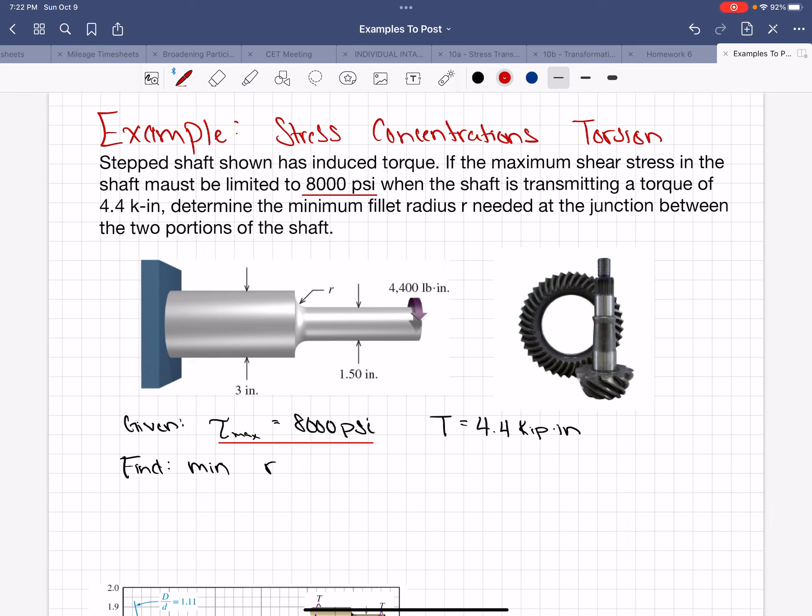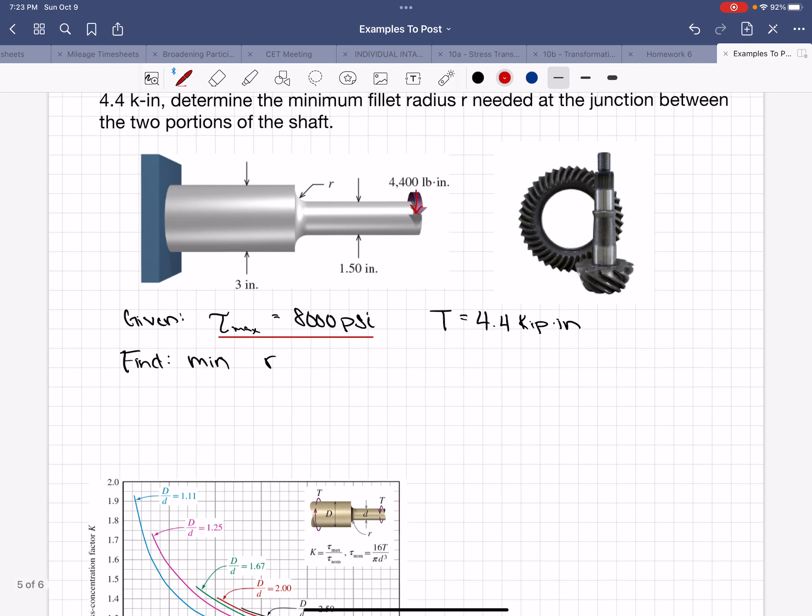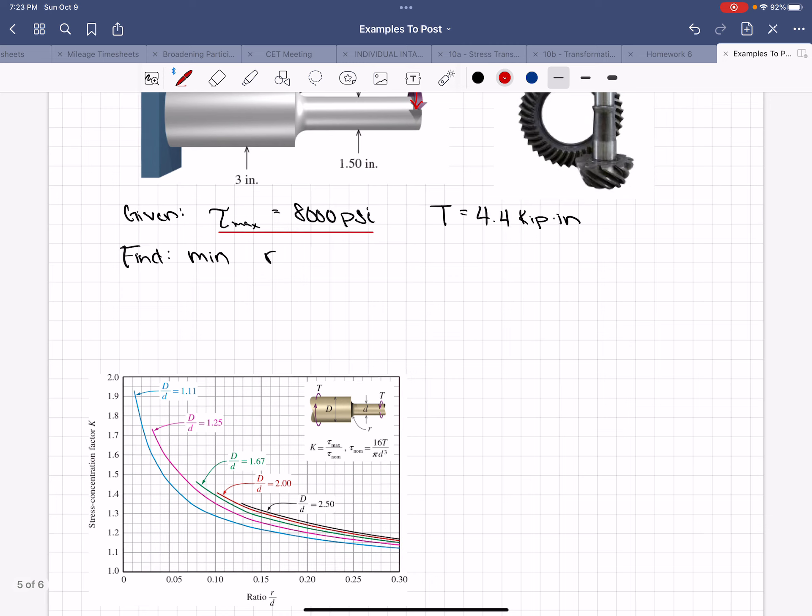When the shaft is transmitting a torque of 4.4 kip inches, so we have this torque here, 4.4 kip inches, we're supposed to find the minimum fillet radius needed at the junction between the two portions of the shaft. So this is one of those more convoluted problems where we know tau max and we have to find this r.